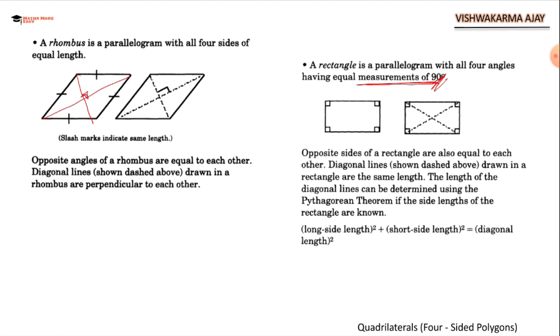The length of the diagonal line can be determined using the Pythagorean theorem. Since there is a 90 degree, you can use a Pythagorean theorem on any of the two adjacent sides. If the side lengths of the rectangle are known, long side length square plus short side length square is equal to diagonal length square.